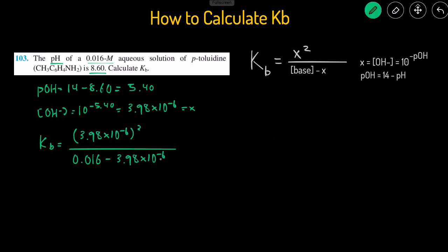But since the x value is so much smaller, 10 to the negative 6 is so much smaller than 0.016, we can just actually ignore this because it's not really going to make a difference in our final answer.